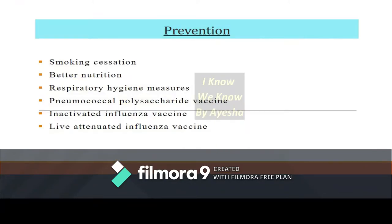Prevention of pneumonia involves health education to the patient and family members, including cessation of smoking, better nutrition, and respiratory hygiene measures — which are very important in preventing bacterial, fungal, and viral infections. Pneumococcal polysaccharide vaccine, inactivated influenza vaccine, or live attenuated influenza vaccine can be given to patients and children to prevent pneumonia in the future.